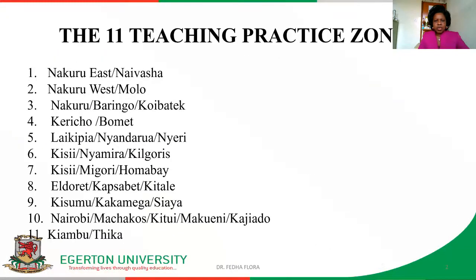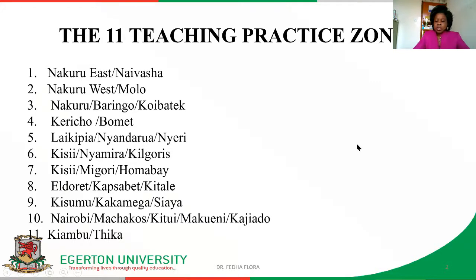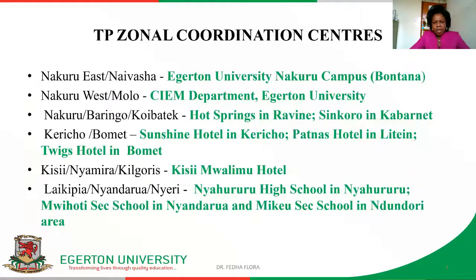We want to understand our teaching practice zones. For your information, we have 11 teaching practice zones — the first being Nakuru East. I know you know where you belong by now, so we don't want to dwell too much on this. You can read the others just in case you want to reach out to your colleagues. For each of the 11 zones we have the coordination centers.